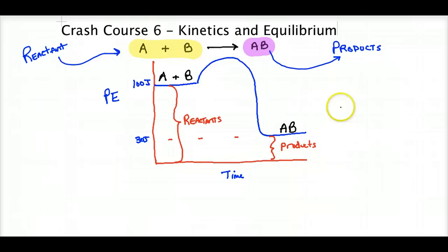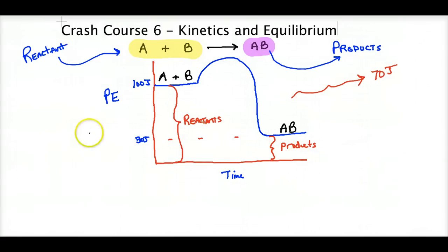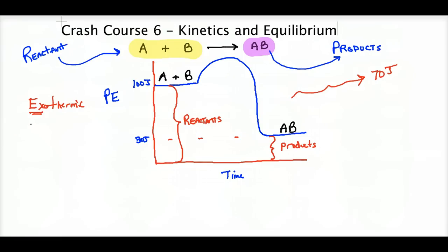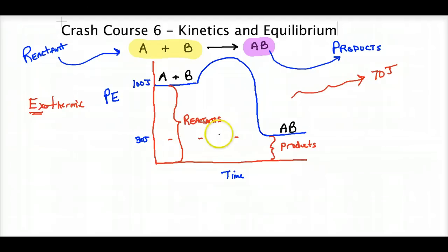Clearly we lost some energy — energy was released — about 70 joules. This is an example of an exothermic reaction, or an exothermic curve. Exothermic means that heat or energy is exiting; the energy is going down. When you see a potential energy curve, one of the first things to evaluate is where you start and where you finish — whether it's endo or exothermic. This is clearly exothermic because I'm starting high and finishing low.